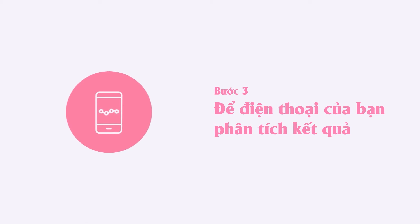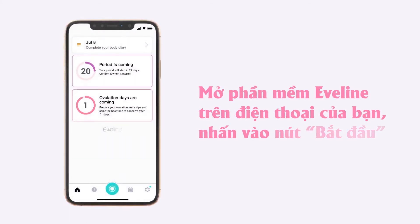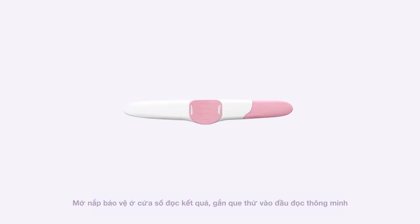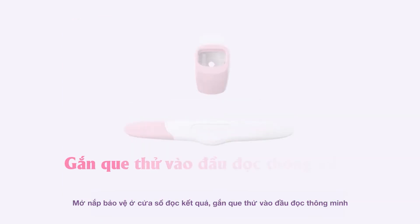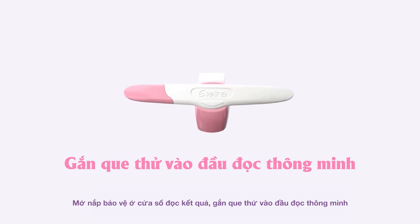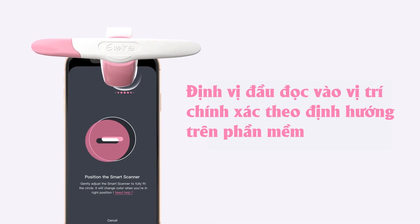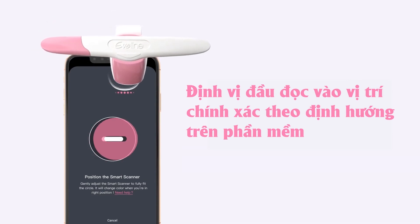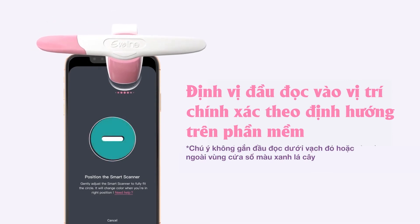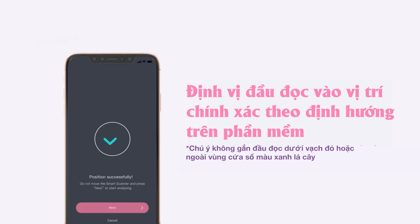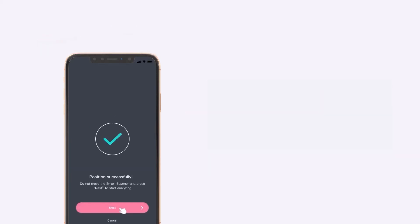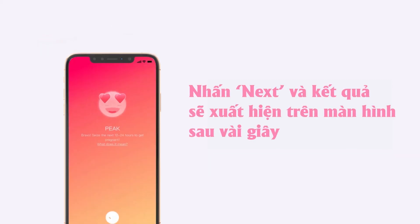Third, let your smartphone analyze your result. Open the EveLine app and press the button to start. Remove the protective cap. Attach the test strip to the smart scanner and position your smart scanner correctly as directed by the app. Please do not position the smart scanner below the dotted red line or outside the green window. Press next and your result will be displayed within seconds.